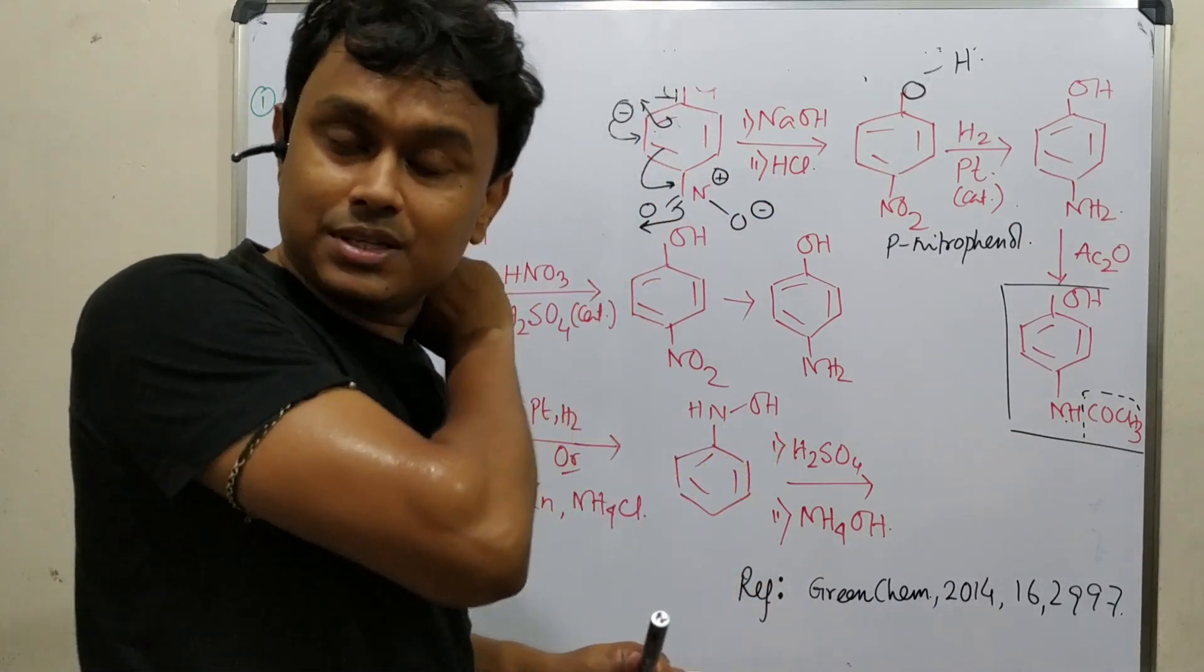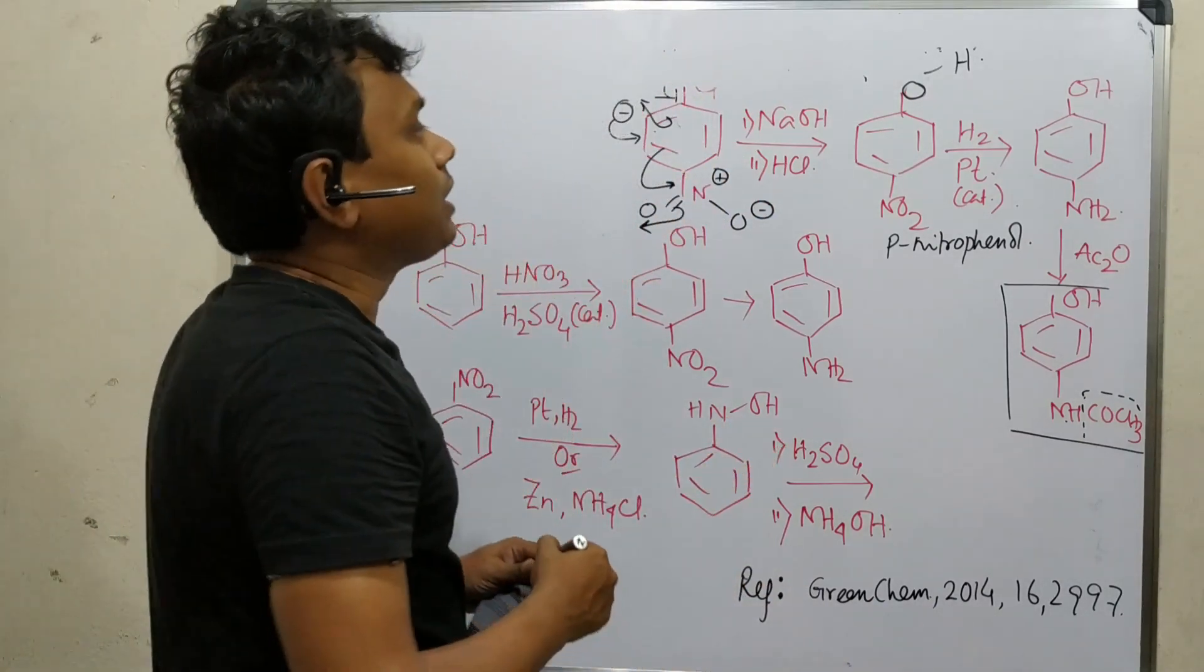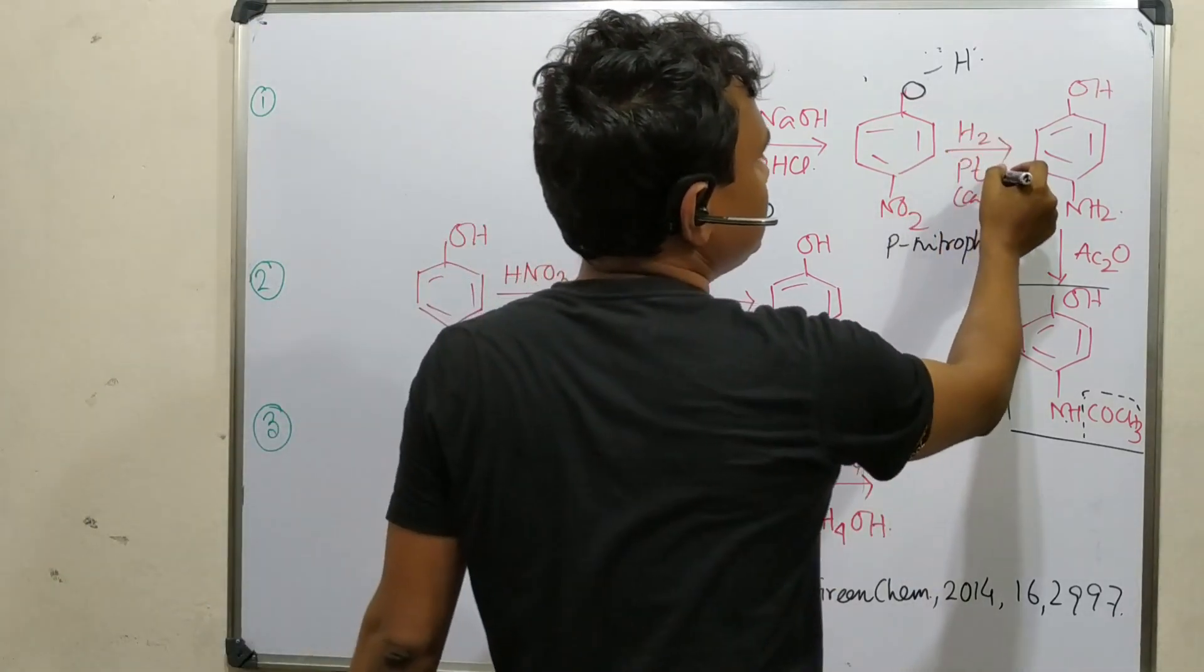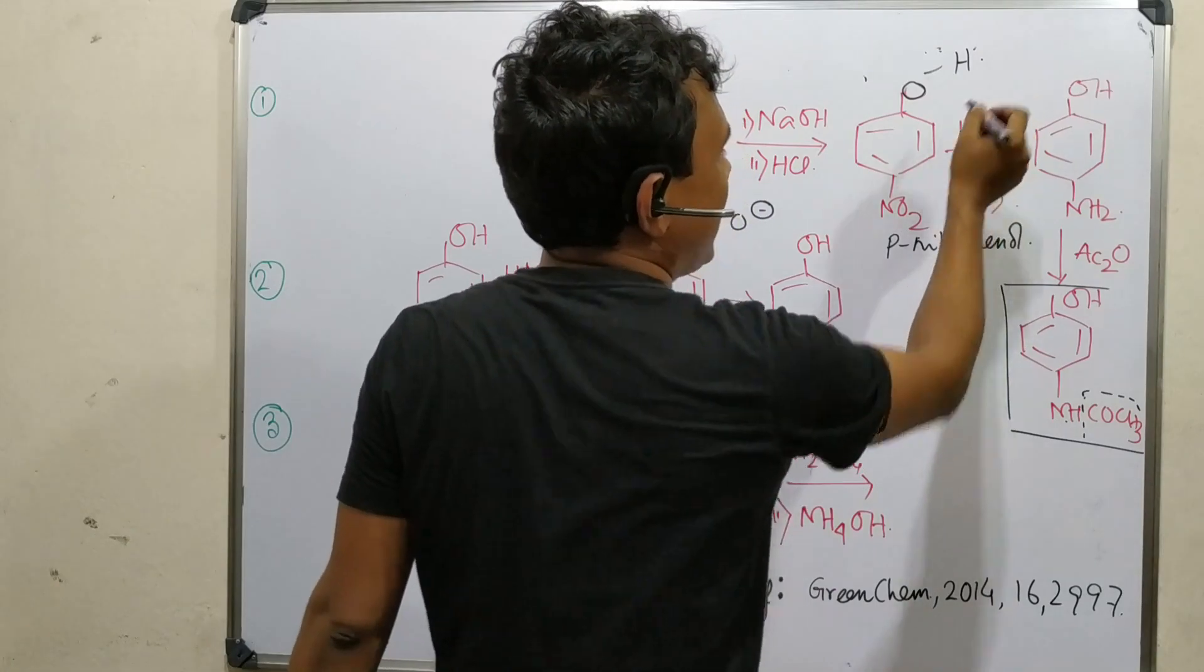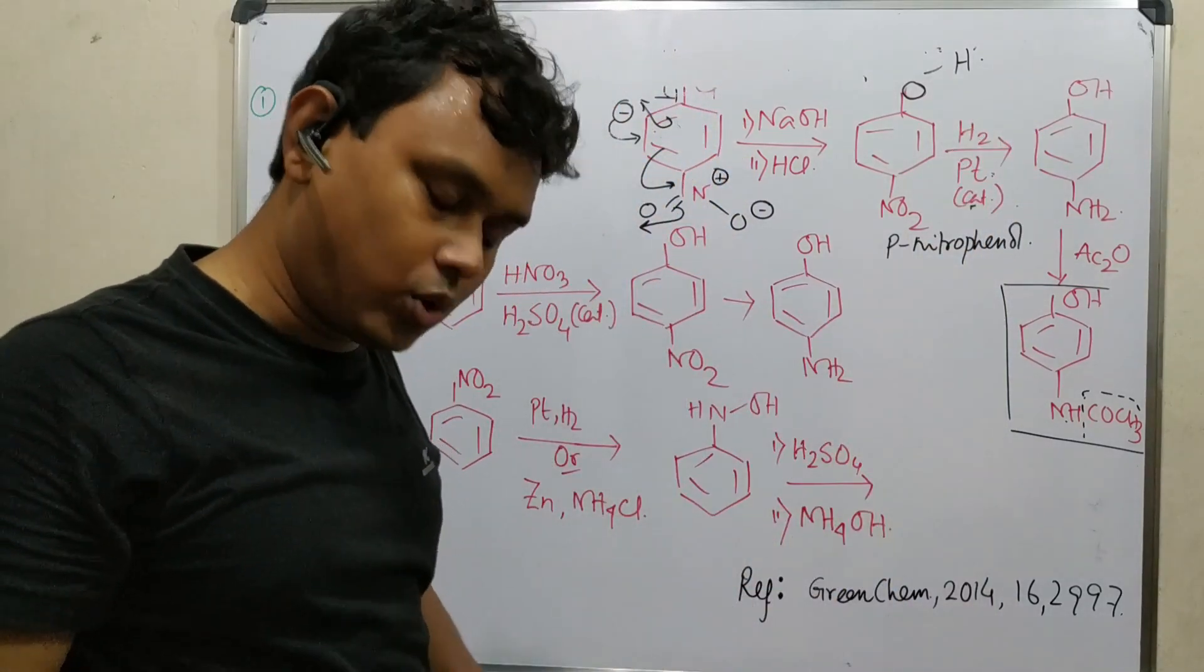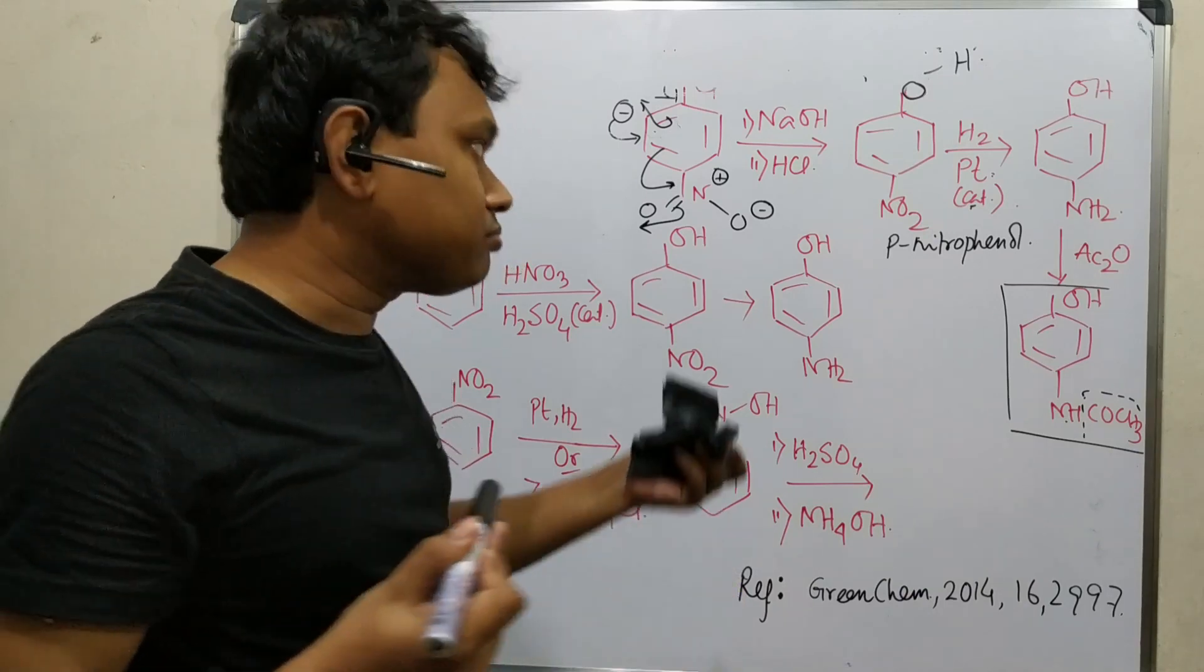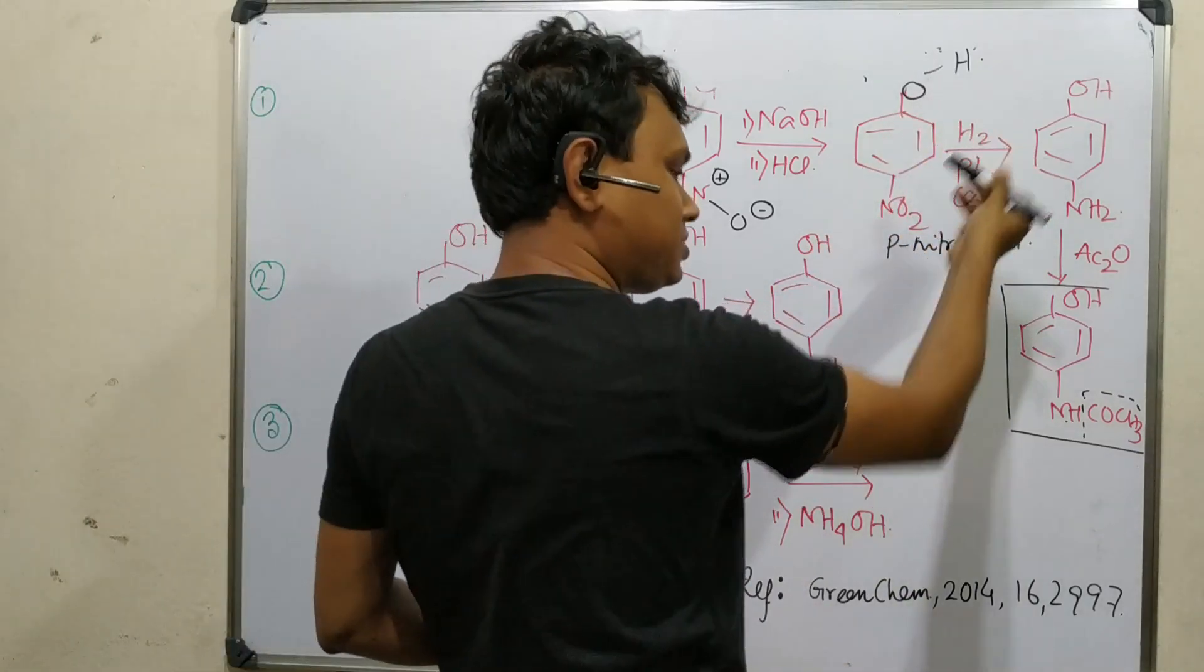You can use other reagents in laboratory scale. In your books - but in industry, what they prefer? They prefer this reduction using a platinum catalyst on hydrogen. Because hydrogen is a green reducing agent. I know platinum is a very costly catalyst. But since it uses hydrogen, it's okay.